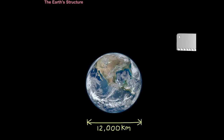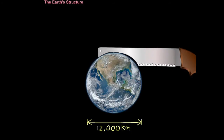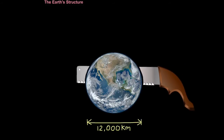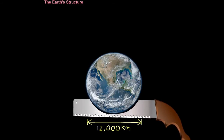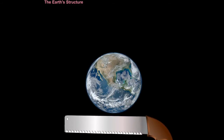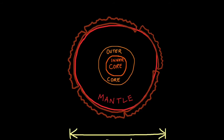For us to understand that the Earth is not a static system — it's always in a state of change — we need to look inside the Earth and take a cross-section through it. Once we do that, we can see that the Earth is made from distinct layers. The innermost layer is referred to as the inner core. Due to the extreme pressure it's under, it acts like a solid. Just outside that, we have the outer core, which is under less pressure so it acts more like a liquid.